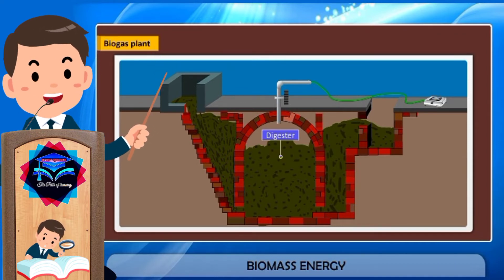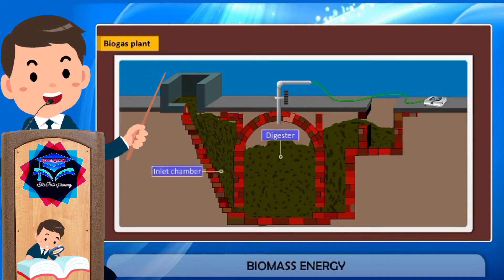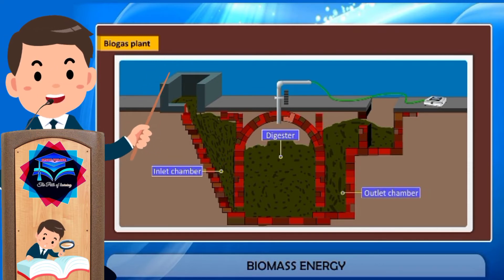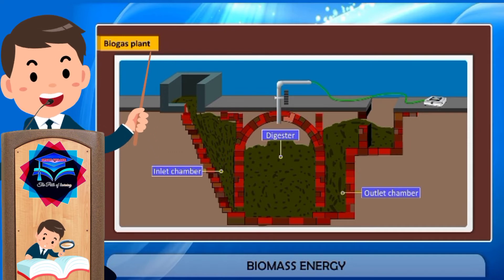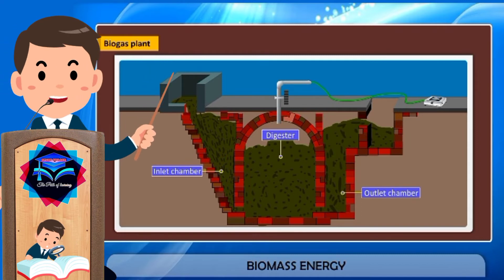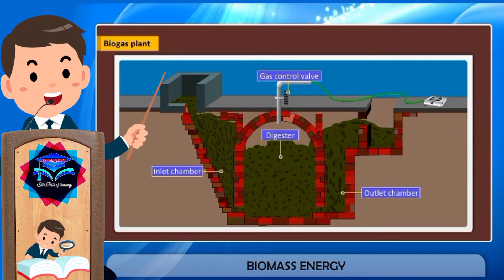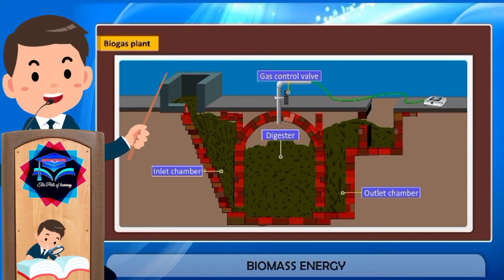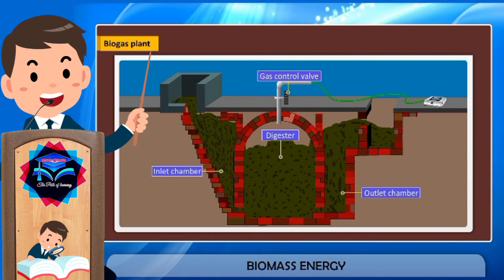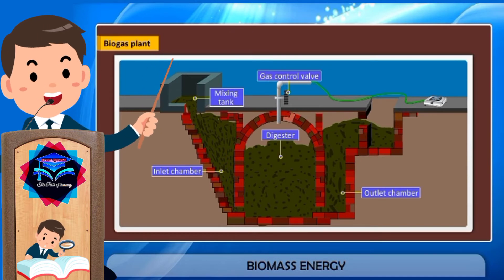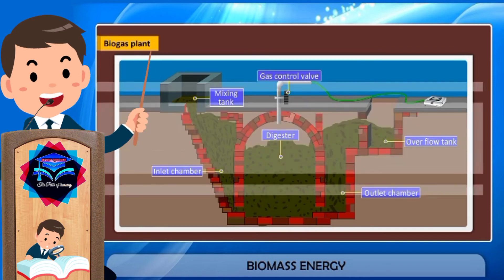On the left side of the digester tank is a sloping inlet chamber, and on the right side there is a rectangular outlet chamber. The digester is a sealed tank in which there is no air or oxygen. The dome of the digester tank acts as a gas holder or storage tank for the biogas and has a gas outlet at the top with a valve. The inlet chamber is for introducing fresh dung slurry into the main digester tank, whereas the outlet chamber is for taking out the spent dung slurry after extraction of biogas. The inlet chamber is connected to a mixing tank while the outlet chamber is connected to the overflow tank.